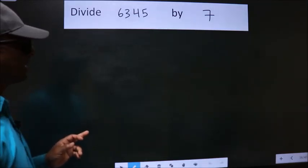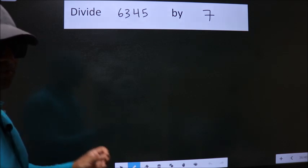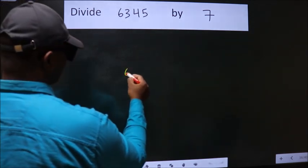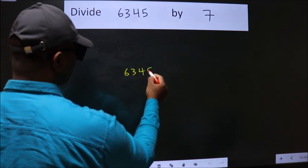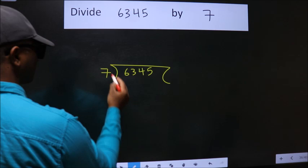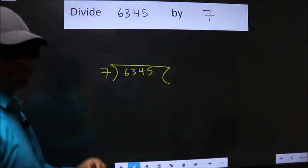Divide 6345 by 7. To do this division, we should frame it in this way. 6345 here, 7 here. This is your step 1.